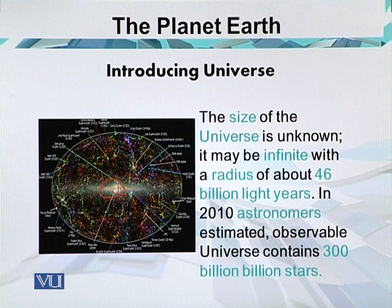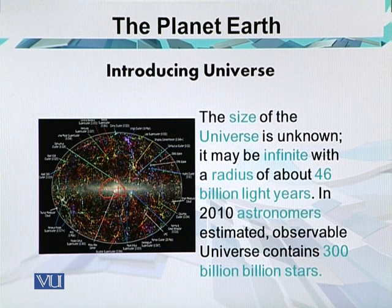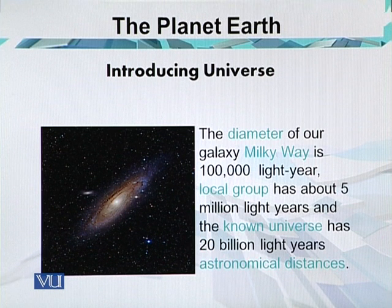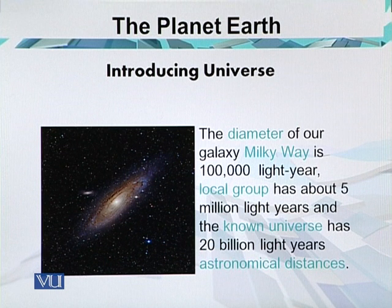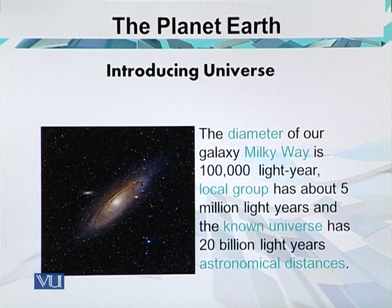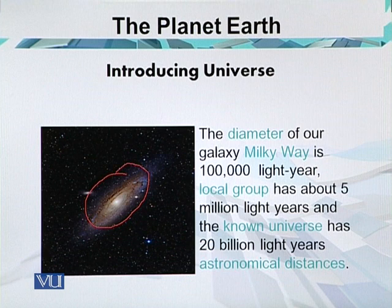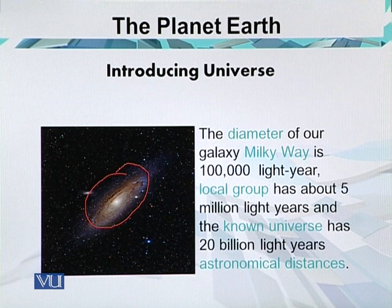These are astronomical distances used when discussing the diameters of celestial bodies. The diameter of our galaxy, the Milky Way, is 100,000 light years. The local group has about 5 million light years, and the known universe has 20 billion light years in diameter. The Milky Way is disk-like in shape, and most of the planets and stars move around its center, which is an extremely dense, high-density mass.